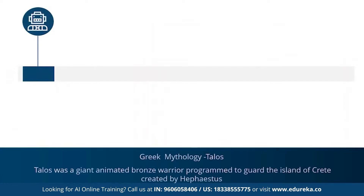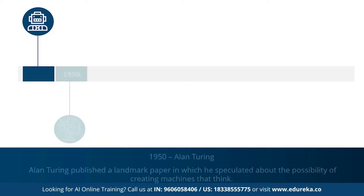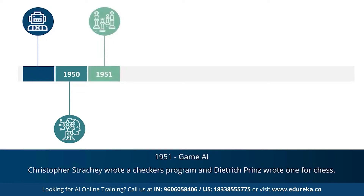The concept of AI goes back to the classical ages. Under Greek mythology, the concept of machines and mechanical men were well thought of. An example is Talos, a giant animated bronze warrior who was programmed to guard the island of Crete. In 1950, Alan Turing proposed the Turing test, which determines whether or not a computer can intelligently think like a human being. 1951 marked the era for game AI, when computer scientists developed programs for checkers and chess.